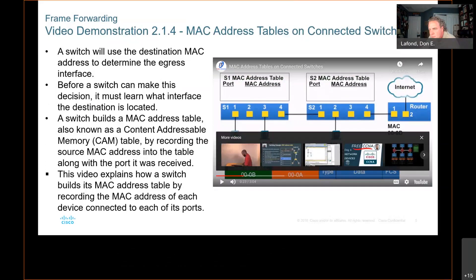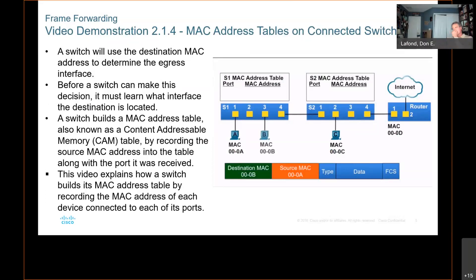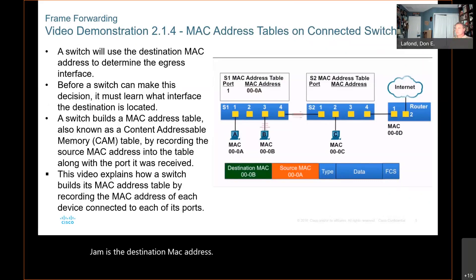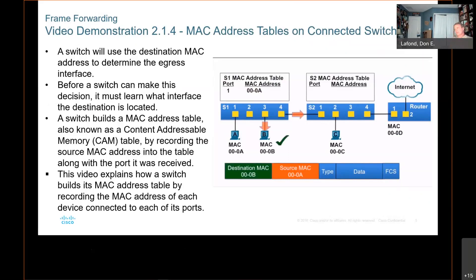PCA has an Ethernet frame to send to PCB. The source MAC address of the frame is 000A, and the destination MAC address is 000B. The Ethernet frame is sent to switch S1. S1 receives the frame, examines the source MAC address, and notices it is not in its MAC address table, so it adds the MAC address and the incoming port number. Next, S1 examines the destination MAC address, notices it is not in its table, so it floods it out all ports. PCB receives the Ethernet frame, examines the destination MAC address against its own, notices a match, and receives the rest of the frame.